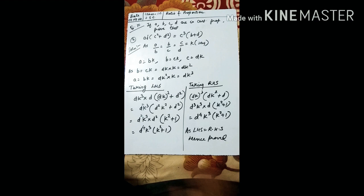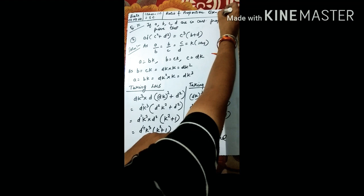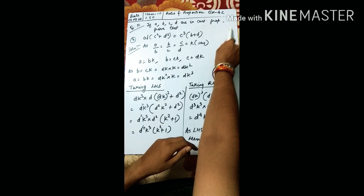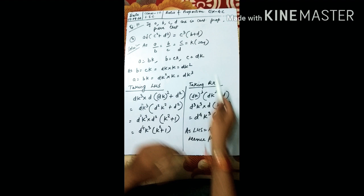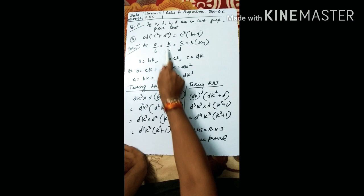Good morning dear students. We were doing Exercise 4C, and from the 10th question we have to start. The first one: if a, b, c, d are in continued proportion, then prove that ad(c² + d²) = c³(b + d). Now, as a, b, c, d are in continued proportion, so a/b = b/c = c/d = k.